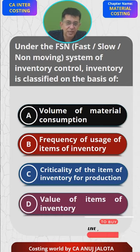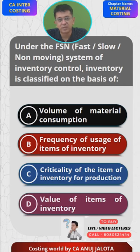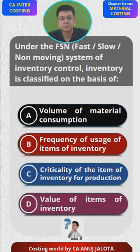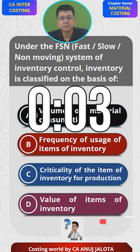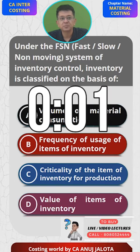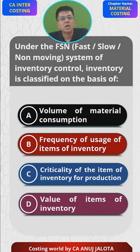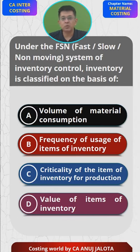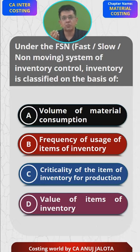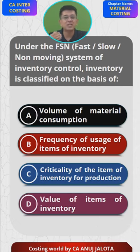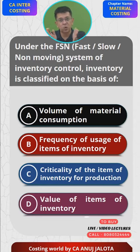Think of the correct answer — we have done ratios also for the FSN system. So what is the FSN system? I would like to find out which units I consume very fast and which units of raw material I consume very slowly.